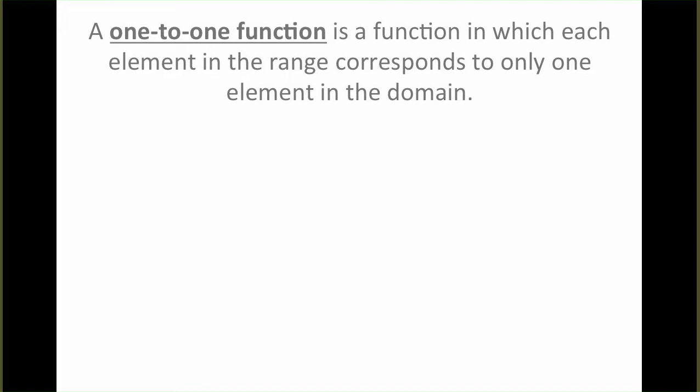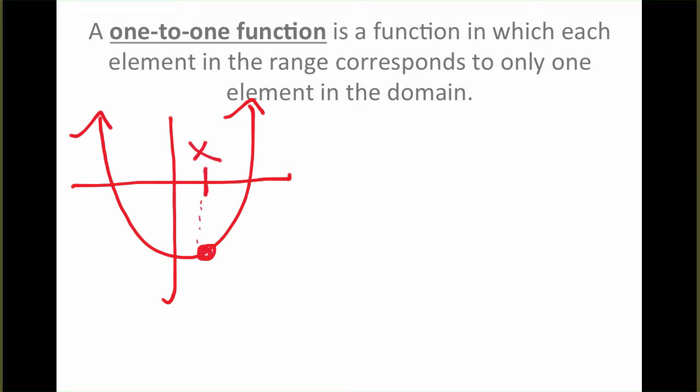Hopefully that definition seems a little bit familiar. If you think back to the beginning of the semester, we talked about the definition of a function. For something to be a function, each element in the domain had to correspond to only one element in the range. So every x value could only have one y value, and in order for something to be a function, it had to pass what we called the vertical line test.